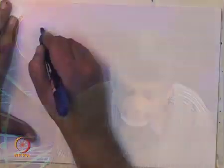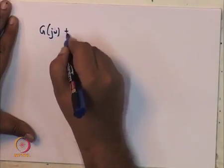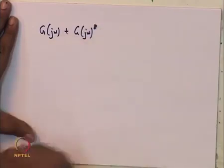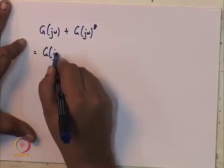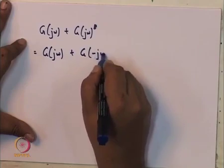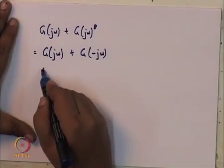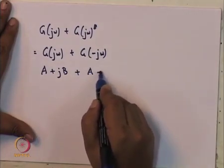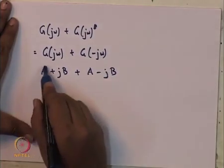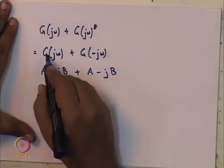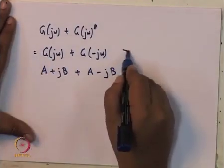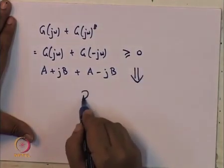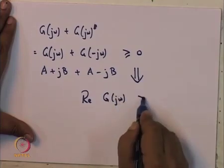Let us look at situations where the real part of G(jω) is greater than or equal to 0 and what that means. The expression G(jω) + G(jω)* is the same as G(jω) + G(−jω). If G(jω) can be written as a + jb, then G(−jω) = a − jb. So the imaginary parts cancel out and we are left with just the real part. Therefore, this being greater than or equal to 0 is the same as saying the real part of the transfer function G(jω) must be greater than or equal to 0.